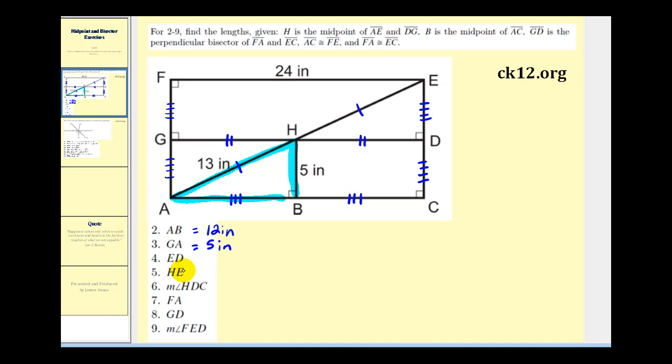Next we want the length of ED. ED is this segment here. Notice it has the same length as segment DC and DC has to be congruent with segment HB, so if this is five inches, segment ED is also five inches.